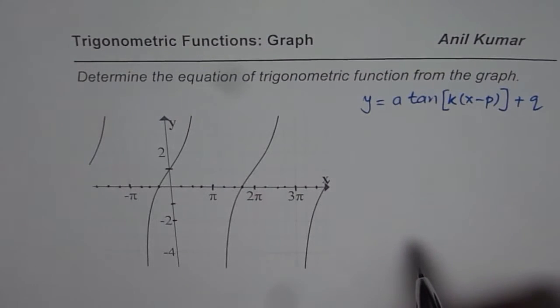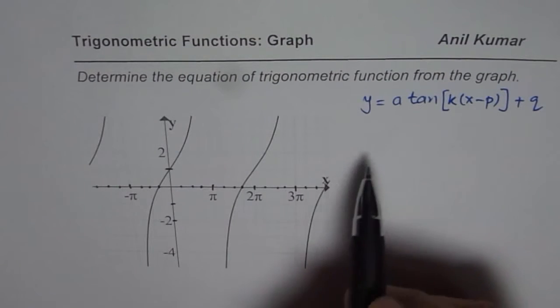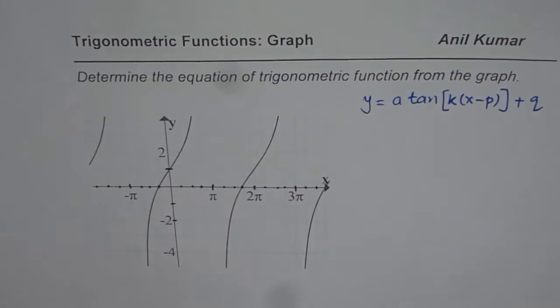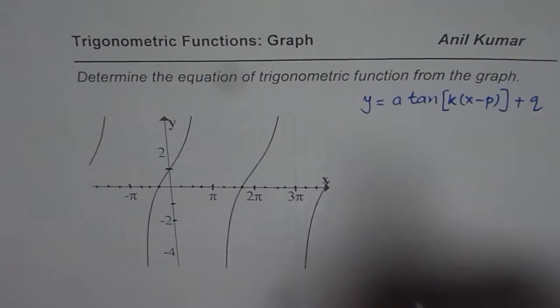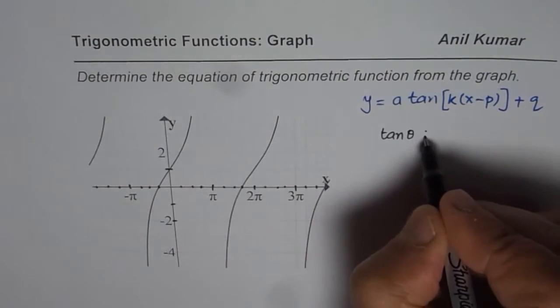Now how are you going to find this equation? That is what we are going to discuss. Time period for a tan function is pi. What I am trying to say is, time period for tan, let us say if we consider tan theta as a base function, in that case time period is pi.